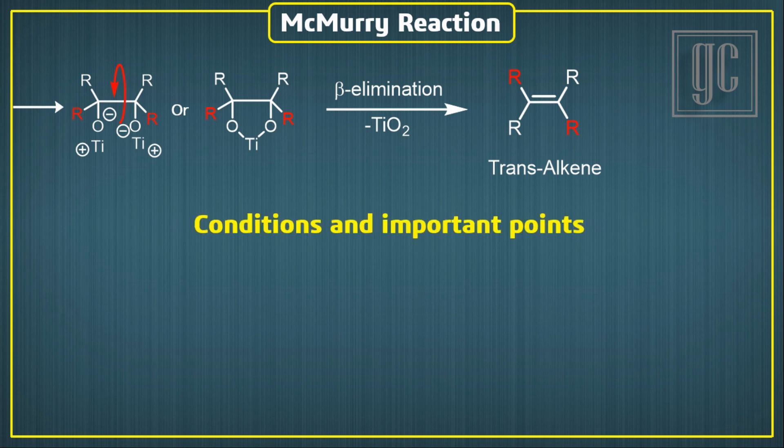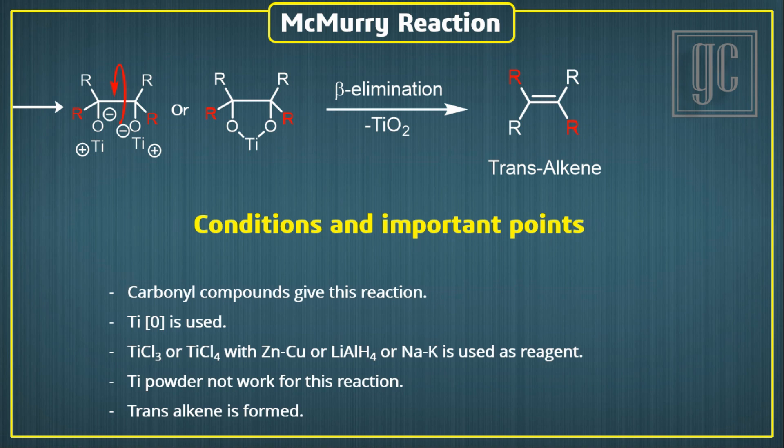The conditions and important points for the reaction: Carbonyls give such types of reaction. Titanium is used in zero oxidation state. Titanium chloride with zinc and copper, or lithium-aluminium hydride, or sodium and potassium metal, is used as reagent. Titanium metal in powder form does not give McMurray reaction. Trans-alkene forms as the final product.